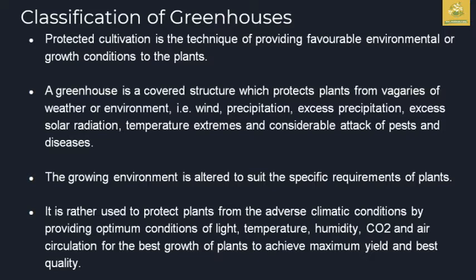Protected cultivation is a technique of providing a favorable environment and growth conditions to plants. A greenhouse must be covered with protective plant structures, which need to be varied for each weather condition — such as wind, excess precipitation, excess solar radiation, temperature extremes, and even attacks of pests and diseases.